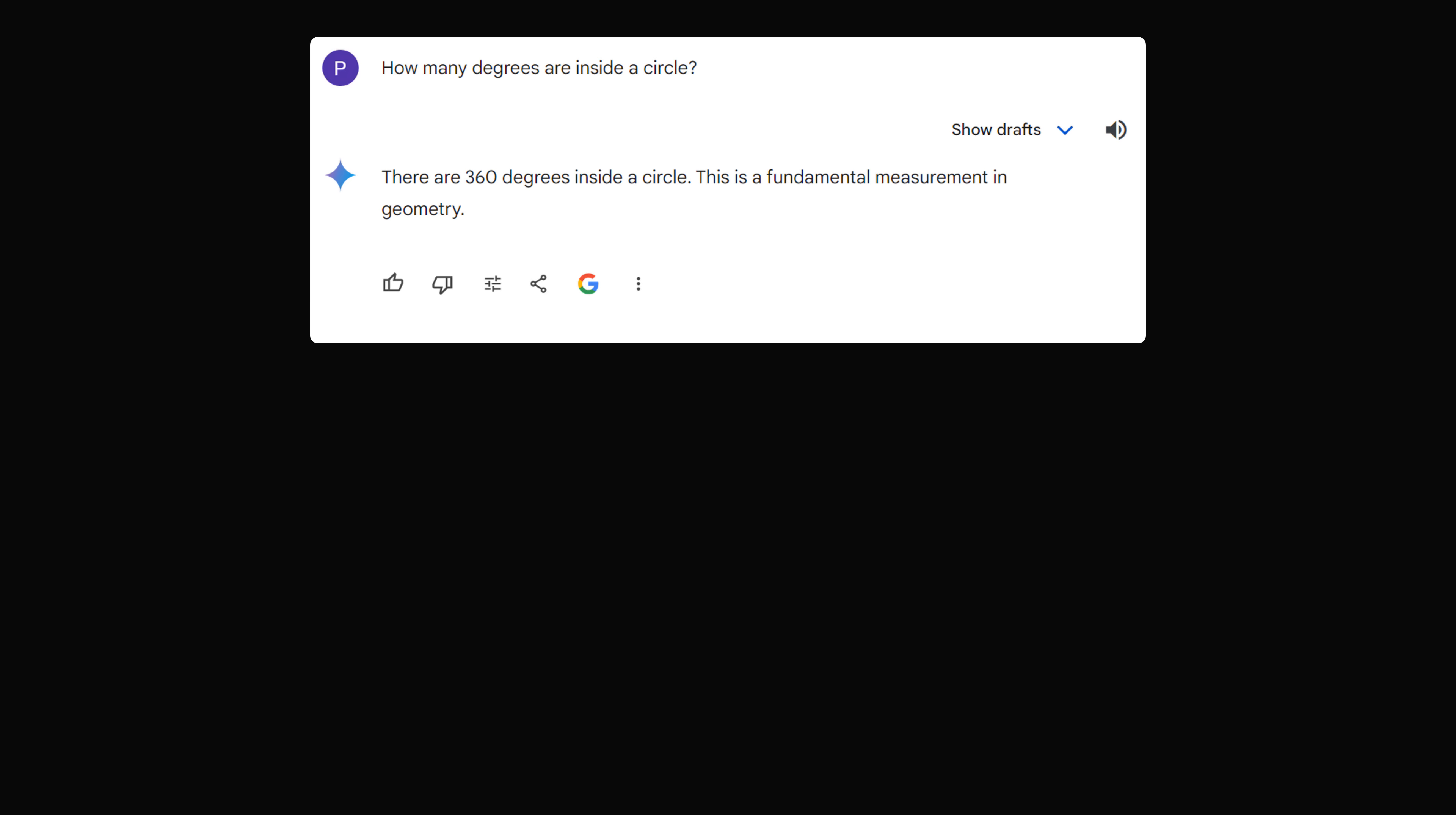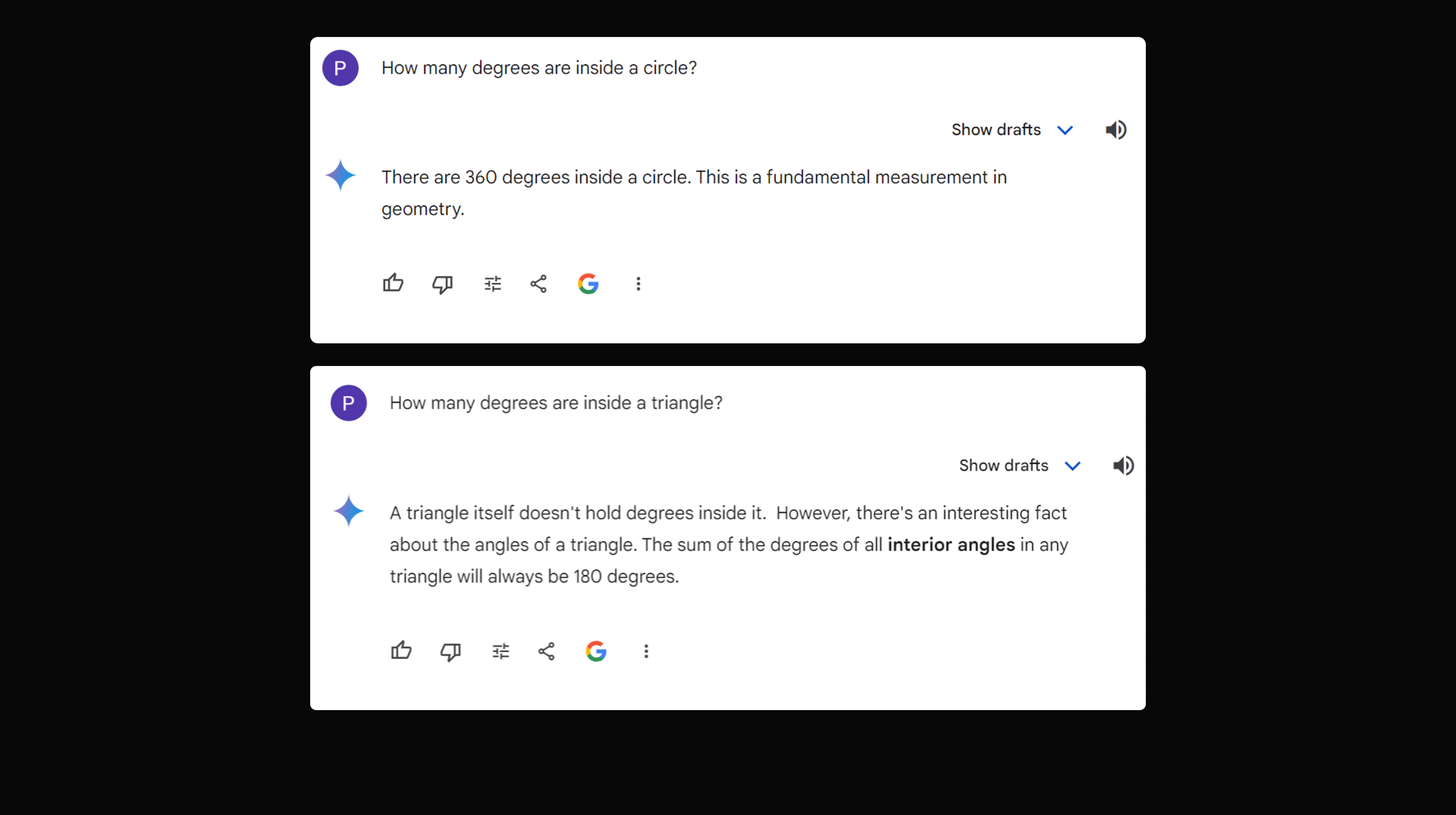Now, since we're talking about language, I pose this question to AI. So Gemini, I said, how many degrees are inside a circle? And the response was, there are 360 degrees inside a circle. This is a fundamental measurement in geometry. In fact, Gemini got tripped up with the other question. How many degrees are inside a triangle? The response was, a triangle itself doesn't hold degrees inside it.